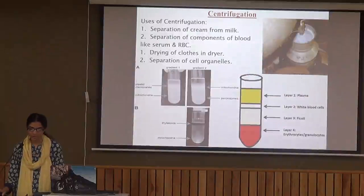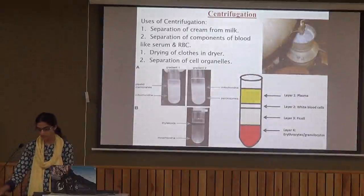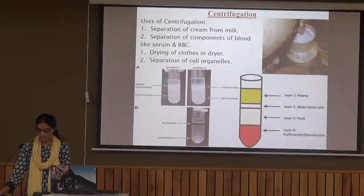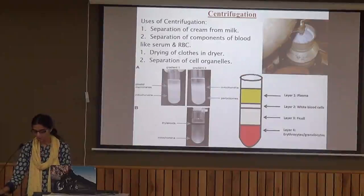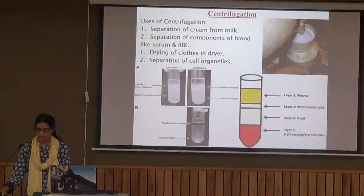These figures show how we can separate the different components of blood like serum, RBC, etc. You can see the heavier particles — solid particles like erythrocytes and granulocytes — at the bottom, and the lighter particles at the top.